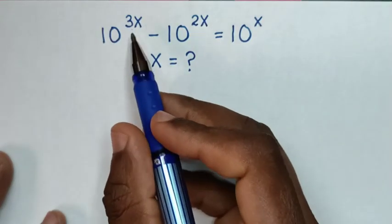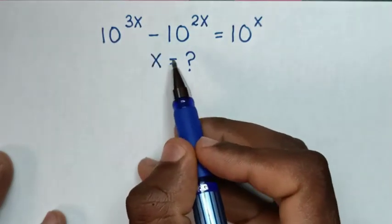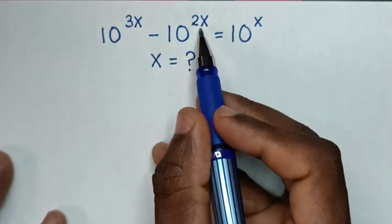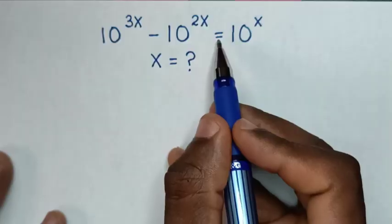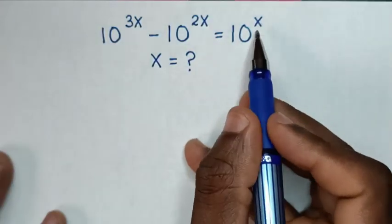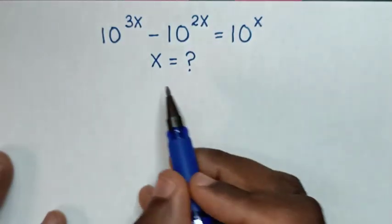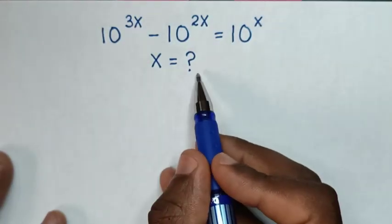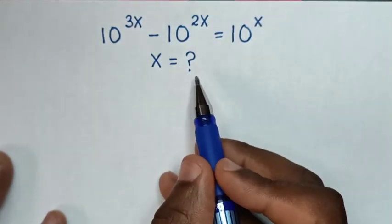10 to the power of 3x minus 10 to the power of 2x is equal to 10 to the power of x. We need to find the value of x from this equation.